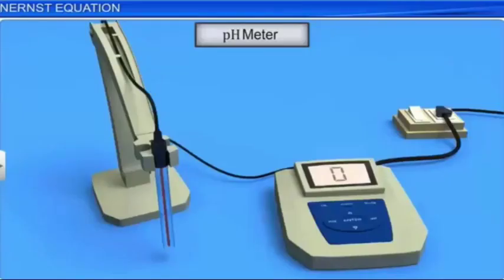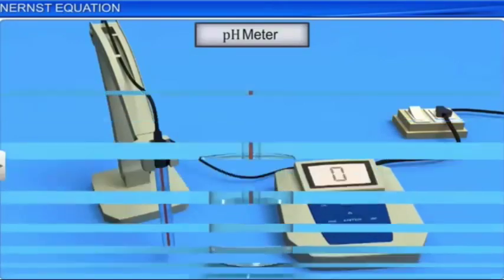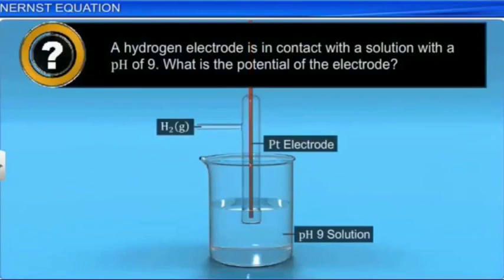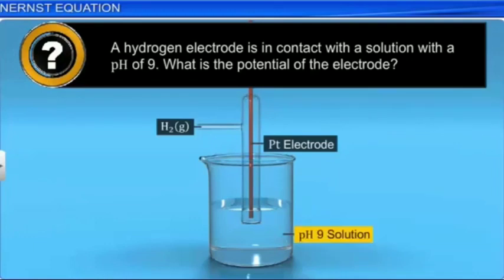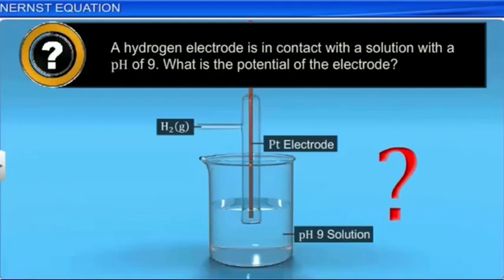pH meters also work on the principle of the Nernst equation. Here is a typical problem you might encounter. A hydrogen electrode is in contact with the solution with the pH of 9. What is the potential of the electrode?